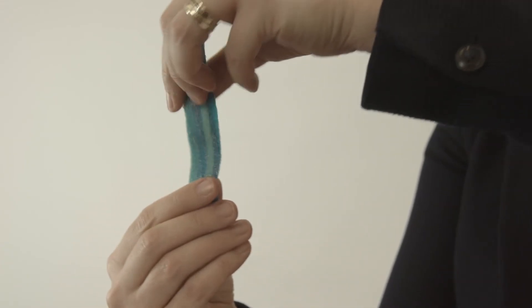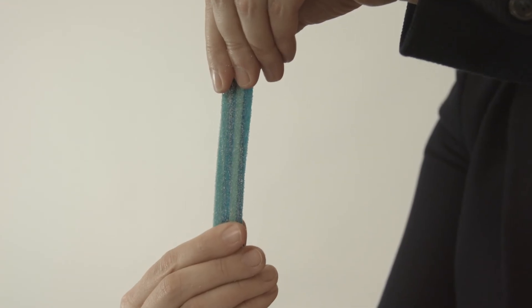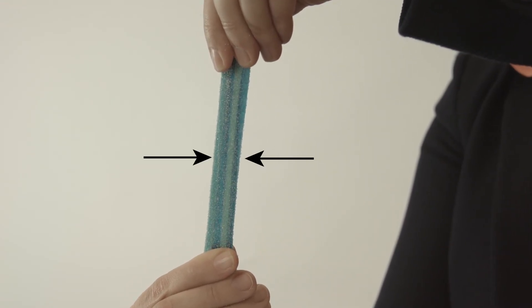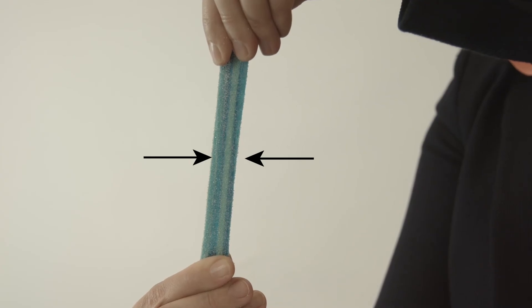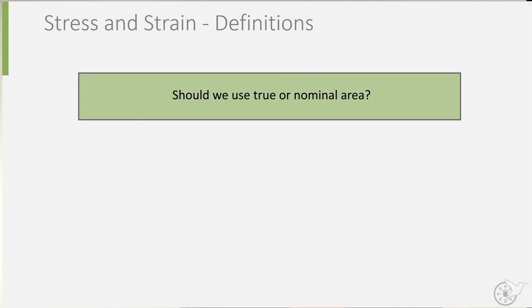If you have ever pulled something apart, such as a strip of flexible candy or gum, you will have probably observed that the strip gets thinner first, before failing completely. This behavior can be seen in more materials, such as metals for instance, and this phenomenon is called necking. If you think about this, you may say that we should no longer divide the load by its original area, but rather by its actual area at the time.